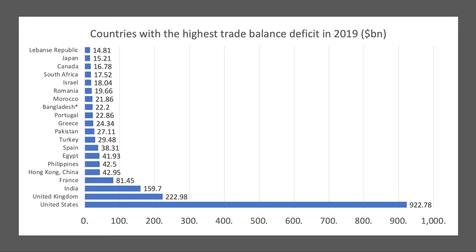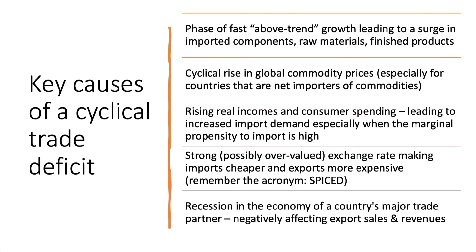These are the countries with the highest trade balance deficit in 2019, expressed in US dollars. The United States runs the highest trade deficit in the world — measured in billions of dollars, just under a trillion dollars. The UK came second, with India, France, and even Hong Kong also in significant deficit. Countries like Turkey, Greece, and South Africa might have a higher deficit when the data is expressed as a share of their GDP — these figures are purely in dollar terms.